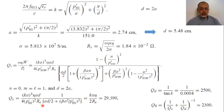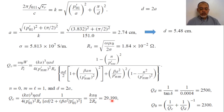Computing the numbers: the quality factor due to conductor loss is given by k·a·η / (2·Rs), with k = 151 m⁻¹, η = 377/√2.08 Ω, a = 2.74 cm, and Rs = 1.84 × 10⁻² Ω. The quality factor due to dielectric loss is Qd = 1/tan δ = 1/0.0004 = 2,500.